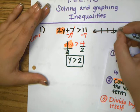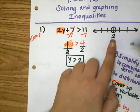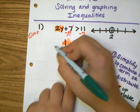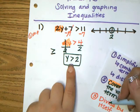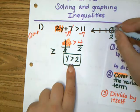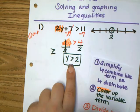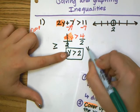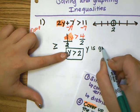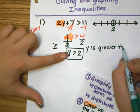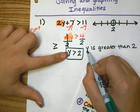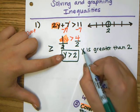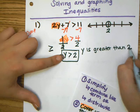Then we are going to graph it. As a review from yesterday: to graph an inequality that does not have an equal to symbol, I am going to leave the circle open, because 2 cannot go back in for y. This says y is greater than 2, and y stands for all the answers.